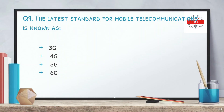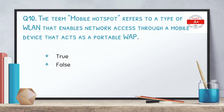The next question: the latest standard for mobile telecommunication is known as — options are 3G, 4G, 5G, and 6G. The answer is 5G. We have already been using 3G and 4G, and 5G is the latest. It is already deployed in some cities and countries, while in others it is still in the implementation phase.